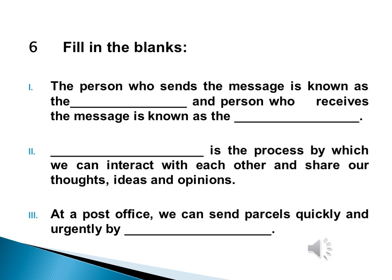In question number six, you have to fill in the blanks. In the first statement, write the name of the person who sends the message and also the person who receives the message. In the second, write the name of the process by which we interact with each other and share our thoughts, ideas, and opinions. In the third, write the service provided by the post office to send parcels quickly and urgently.